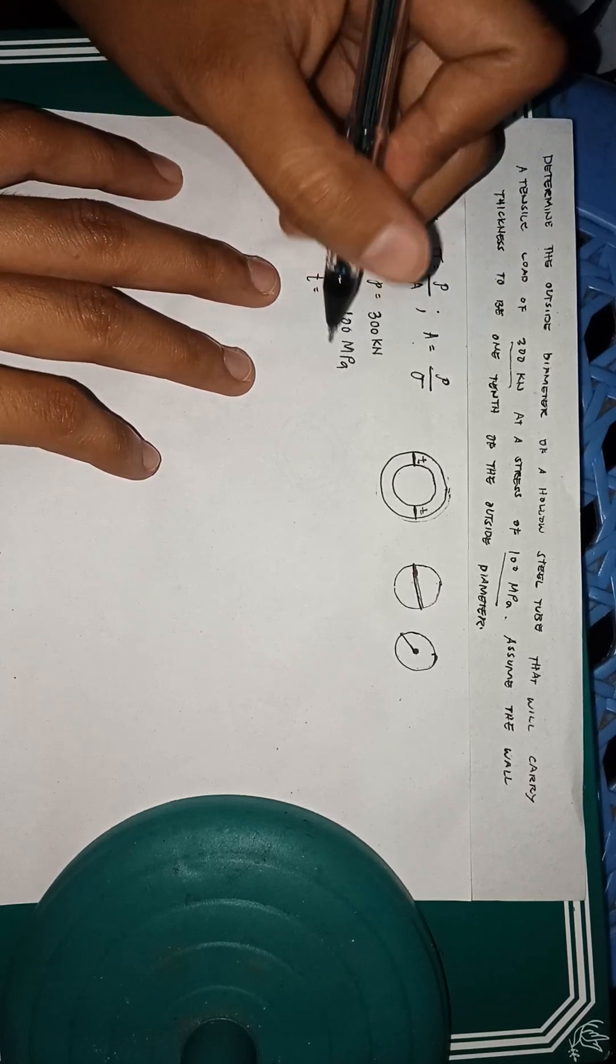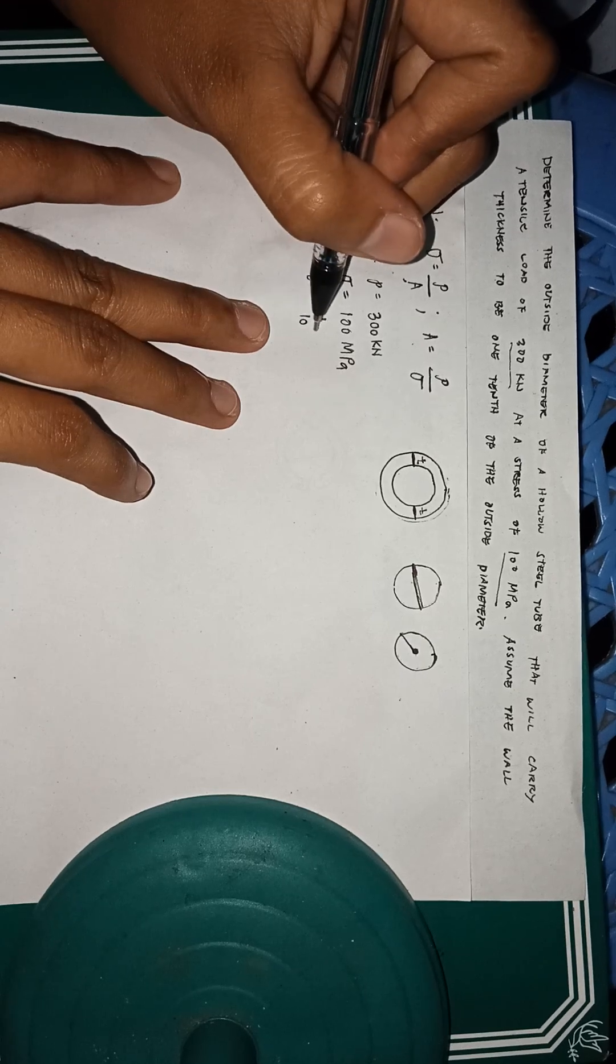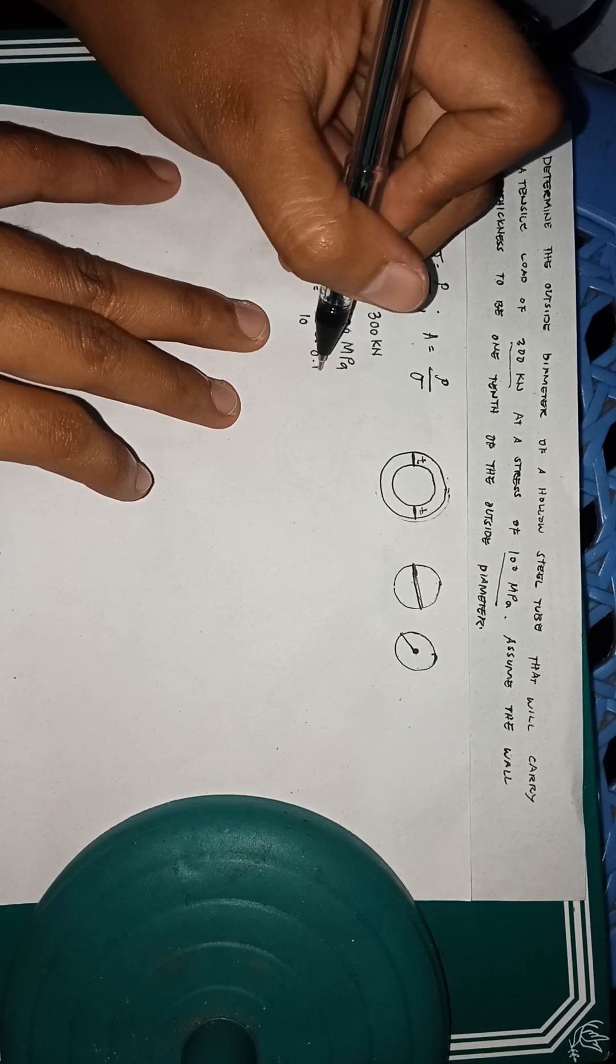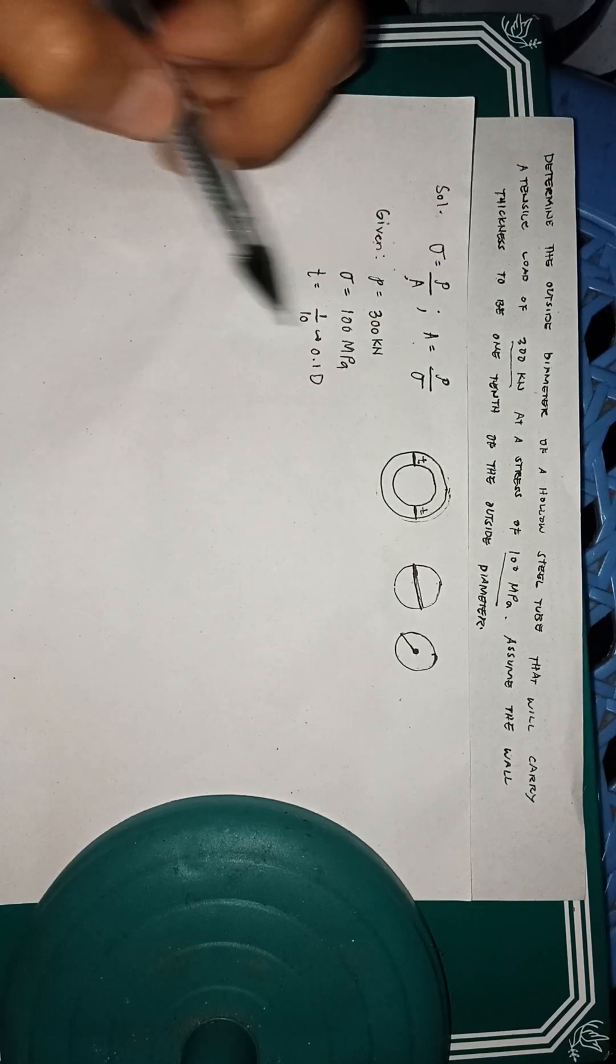The wall thickness is 1 cent of the outside diameter, 1 cent or 0.1, so 0.1D.